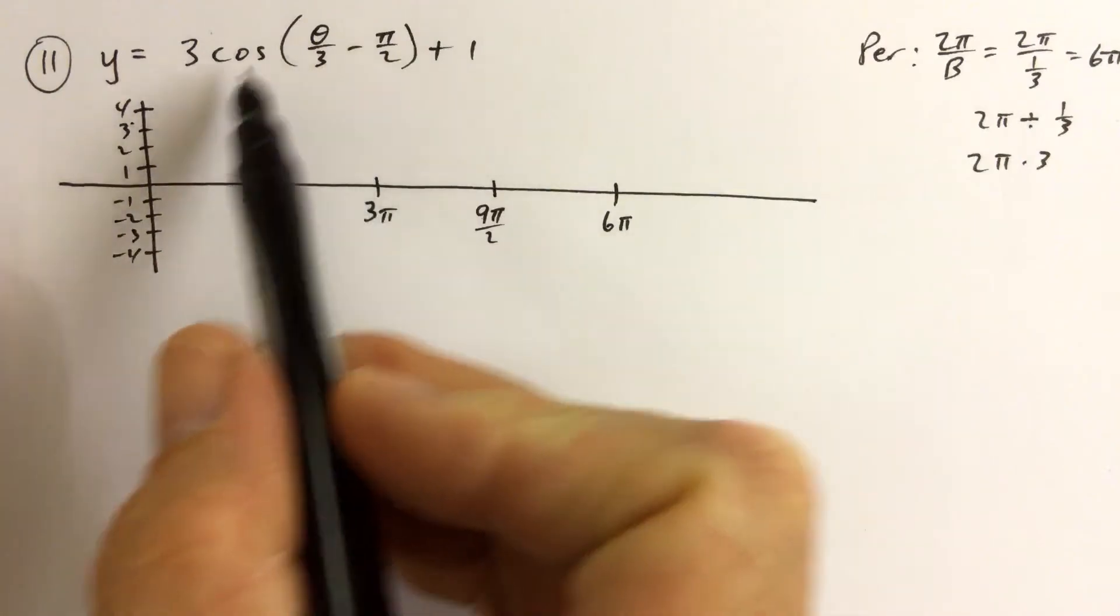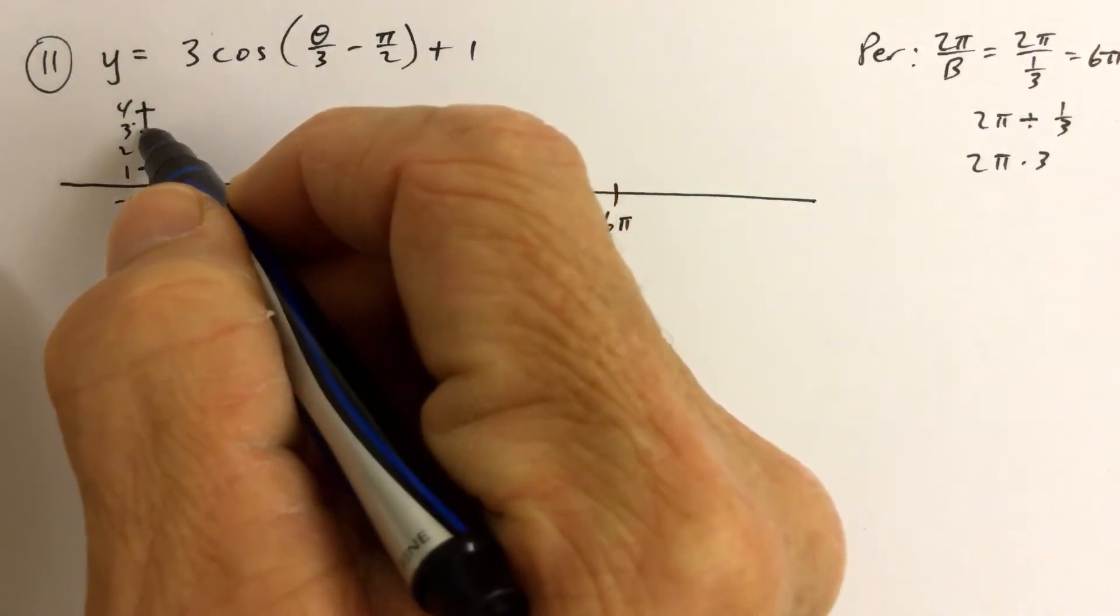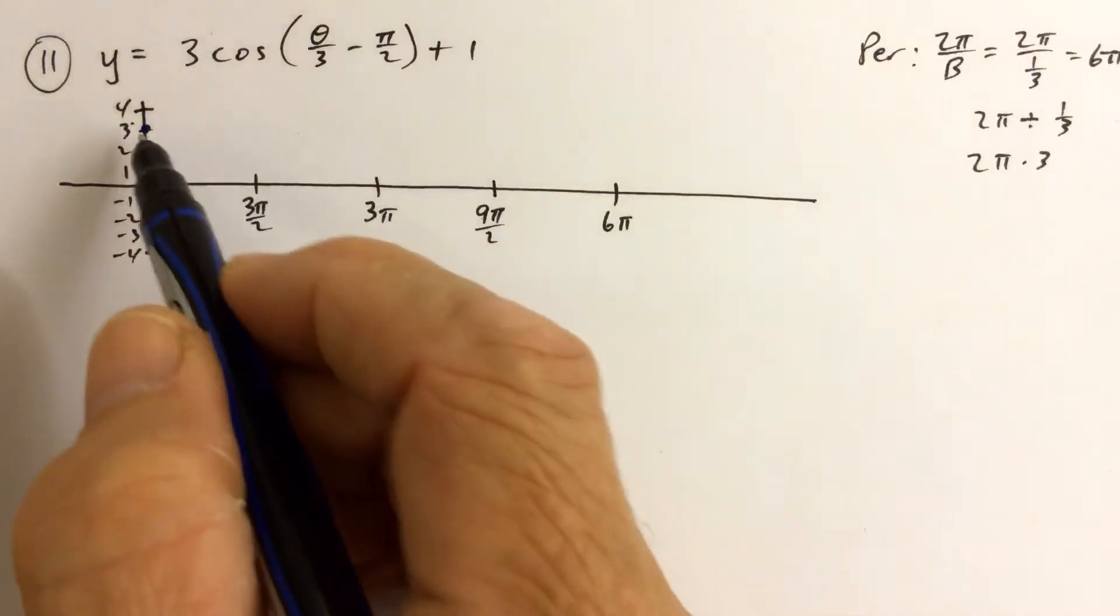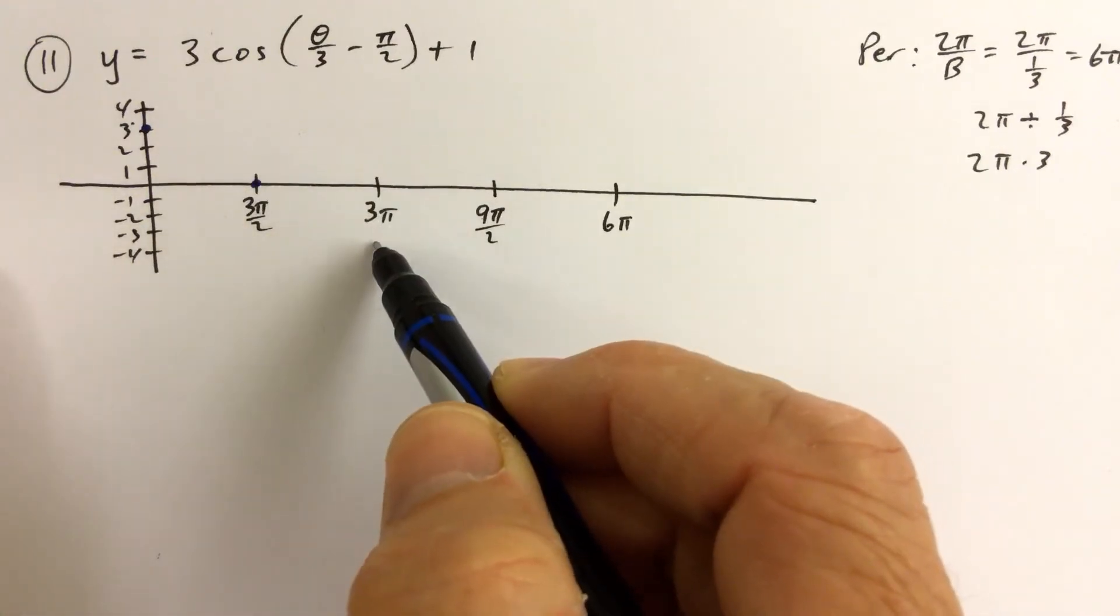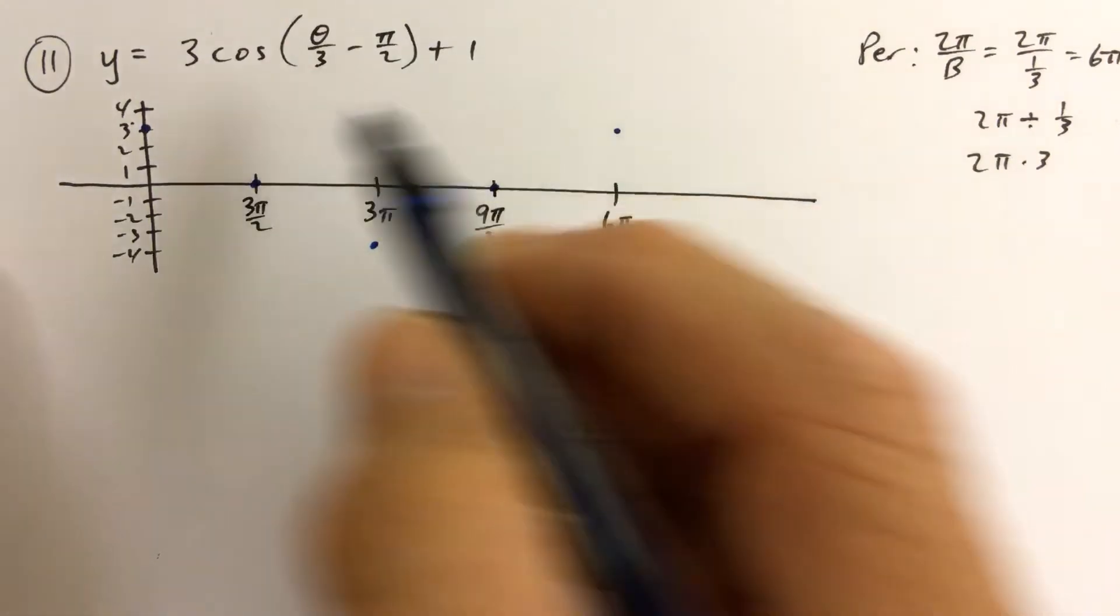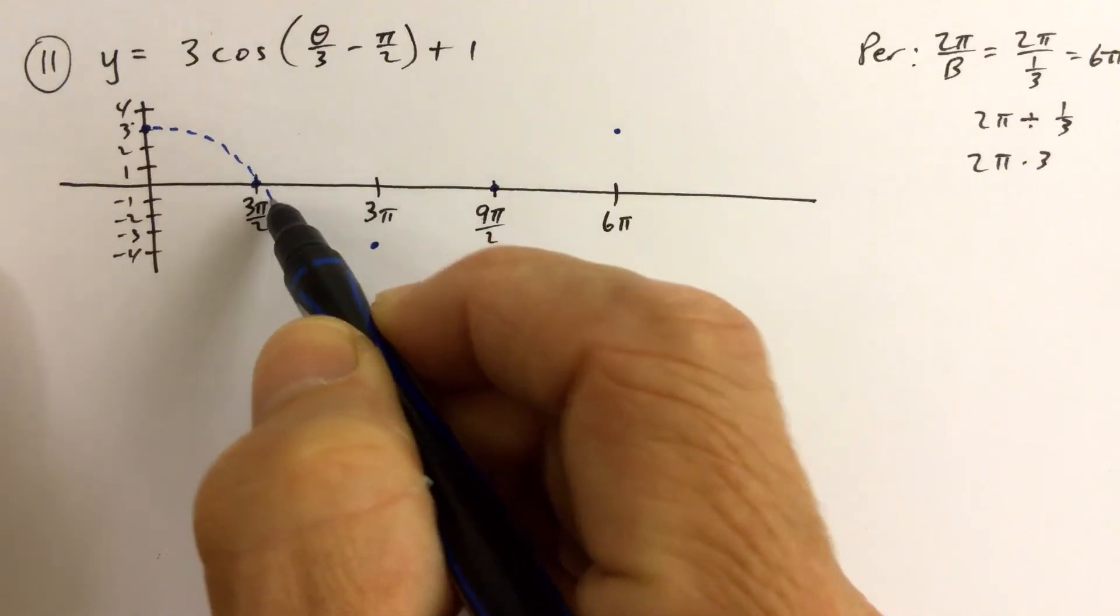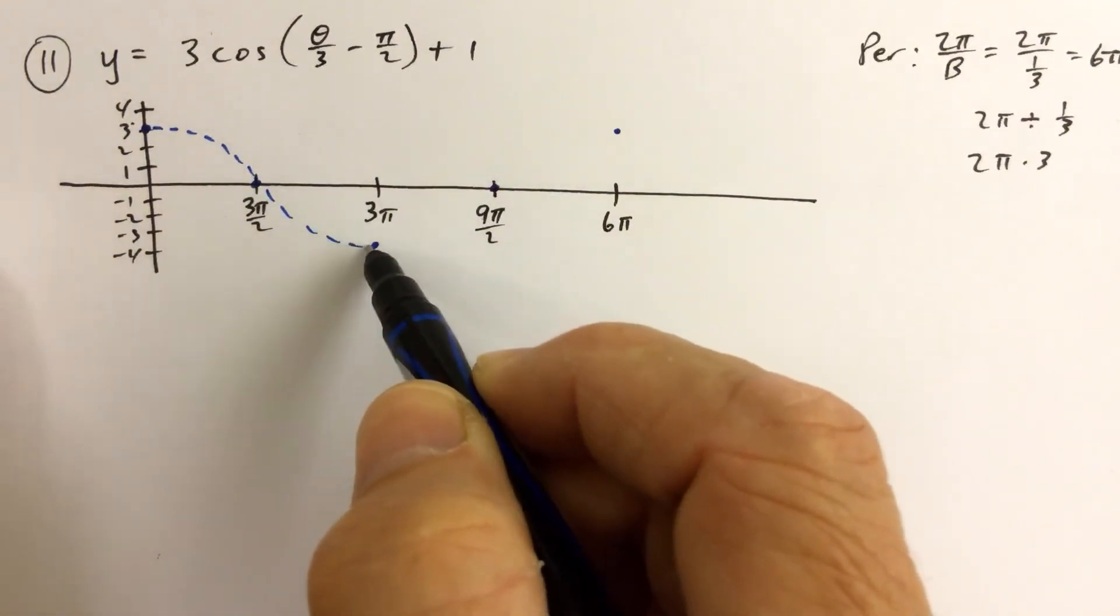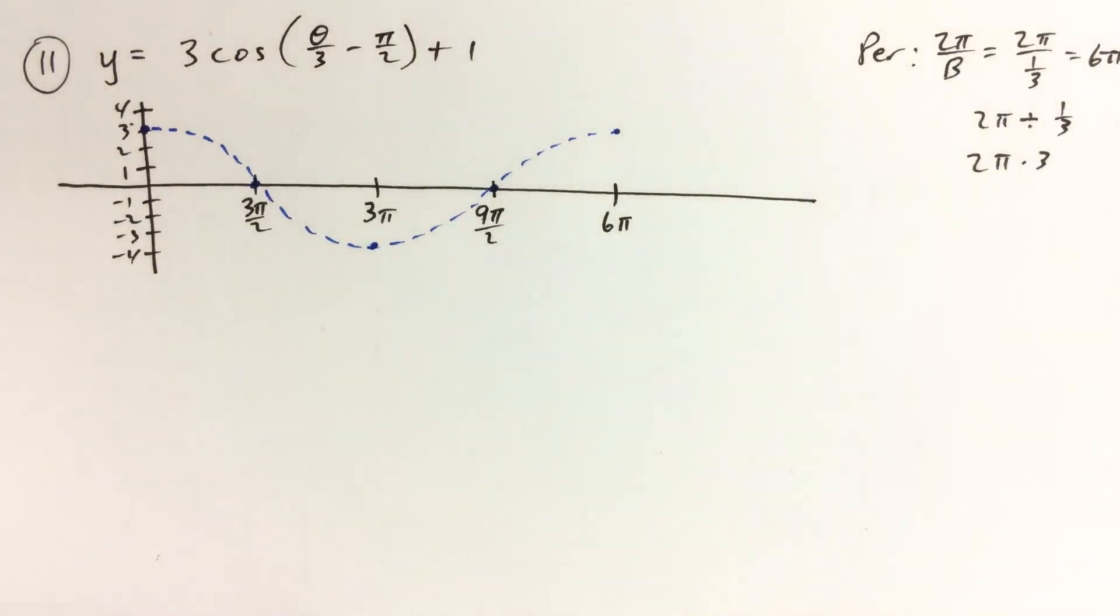So we're going to graph this function as if there's no horizontal or vertical shift. That's the first thing we're going to do. We're going to start at 3, put the 5 key points on there. We start high, go to the middle, down to negative 3, back to the middle, and then back up to positive 3. So here's our rough draft.